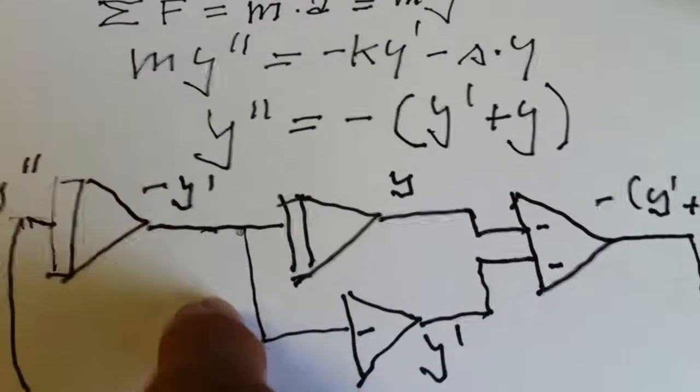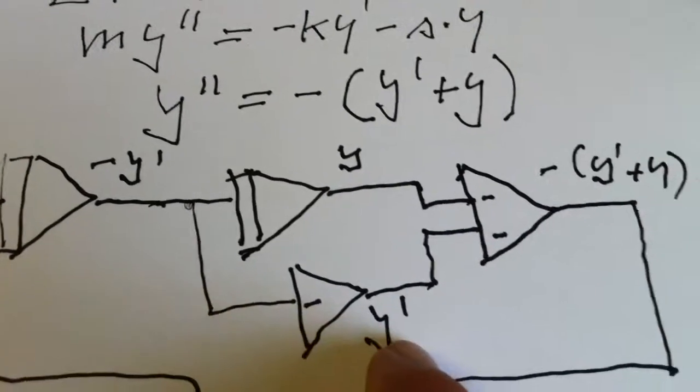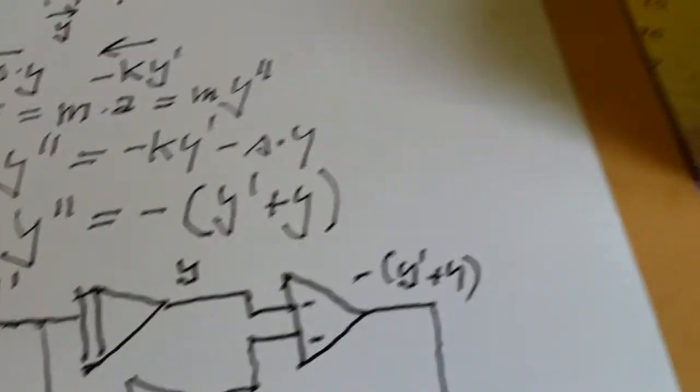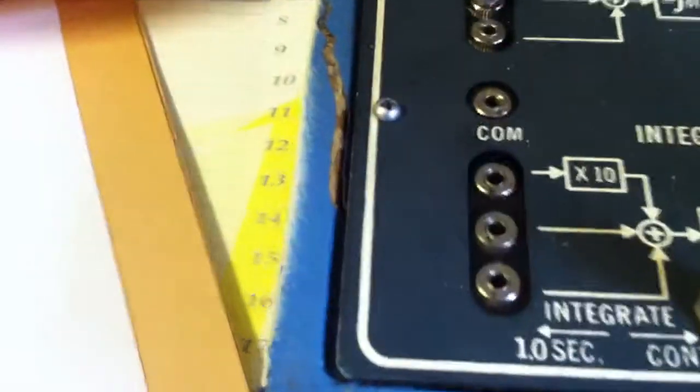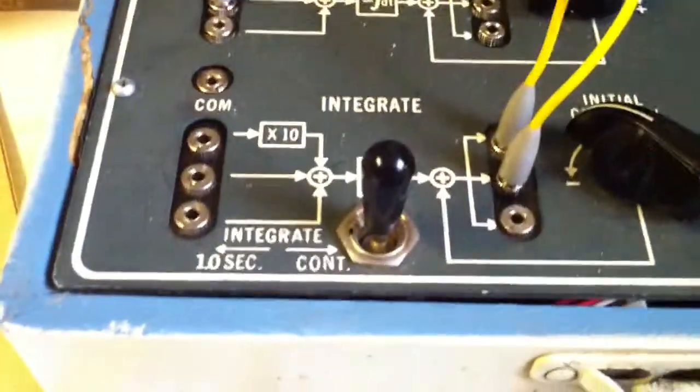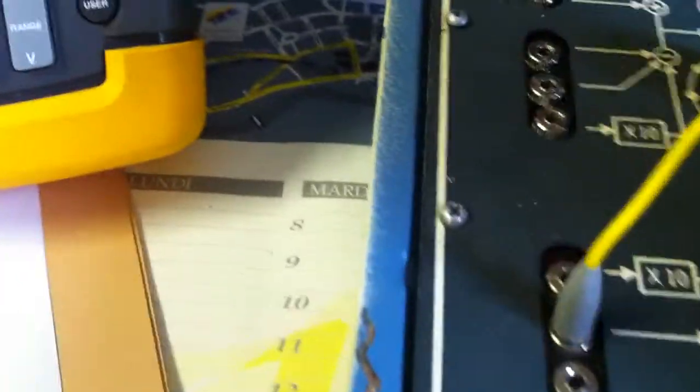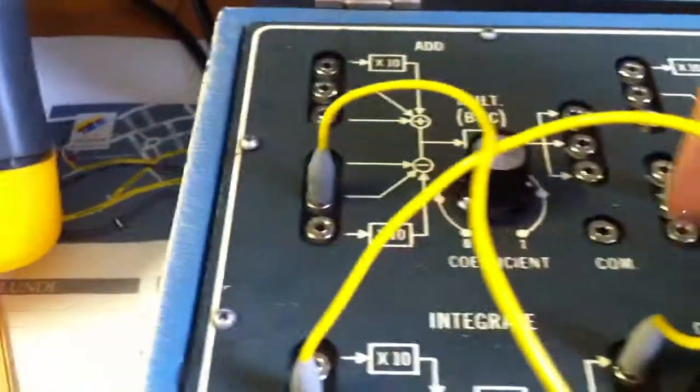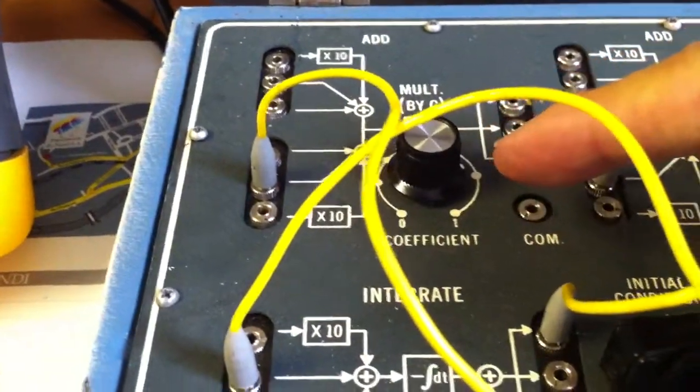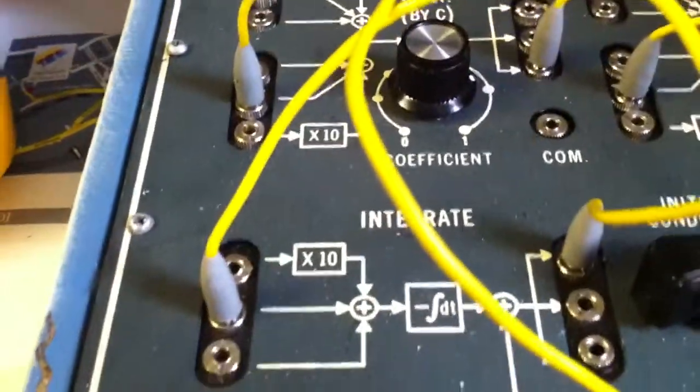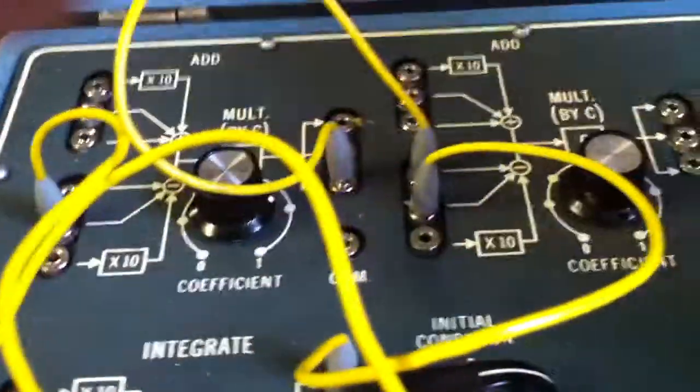We have also to take the output of the first integrator and change its sign by routing it through an inverter. So, the output of the first integrator is here and we will change its sign by routing it through this inverter and the output of this inverter will go to the input of the last adder.